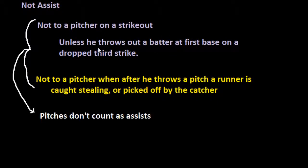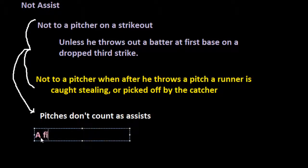The third and final way the rulebook specifically states is not an assist: if a fielder makes a wild throw, that wild throw is not an assist, even if the runner is later put out on the play.